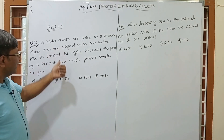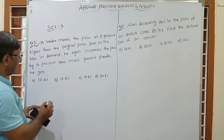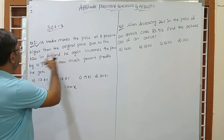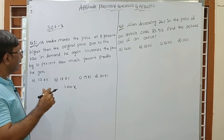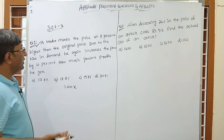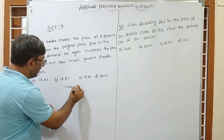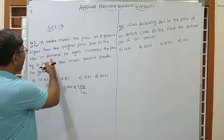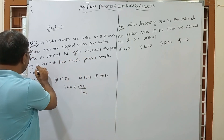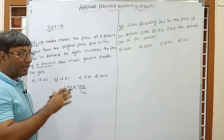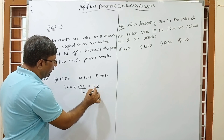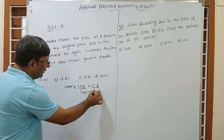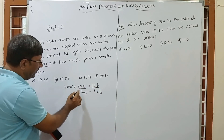For this type of question there is a simple trick. First, assume the original price is 100. Then 8% higher means 100 plus 8%, so you write 108/100. Then again 10% increase means 110/100. The 100s cancel out, leaving 108 × 110.